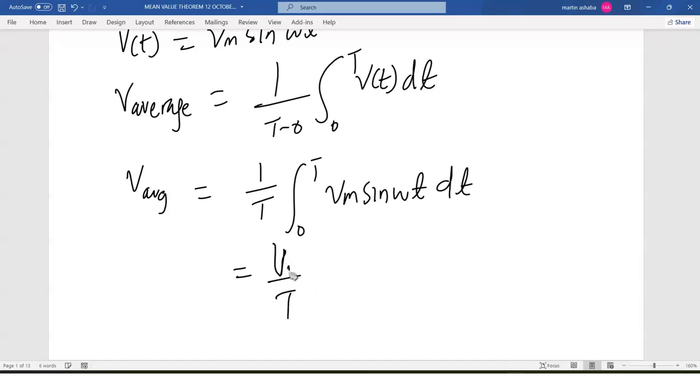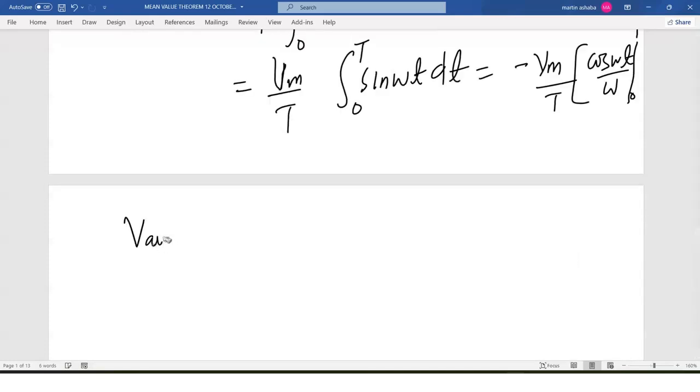integrating from 0 to T of Vm sin(ωt) with respect to t. And this is going to be 1 out of T, and Vm will come out. So integrating sin(ωt) from 0 to T with respect to t will give us: the integral of sin(ωt) becomes negative cos(ωt). So negative Vm out of T into cos(ωt) divided by omega from 0 to T. This becomes Vm divided by T, which is negative. Before we put in the limits, we still have cos(ωt) from 0 to T, and everything is out of omega.